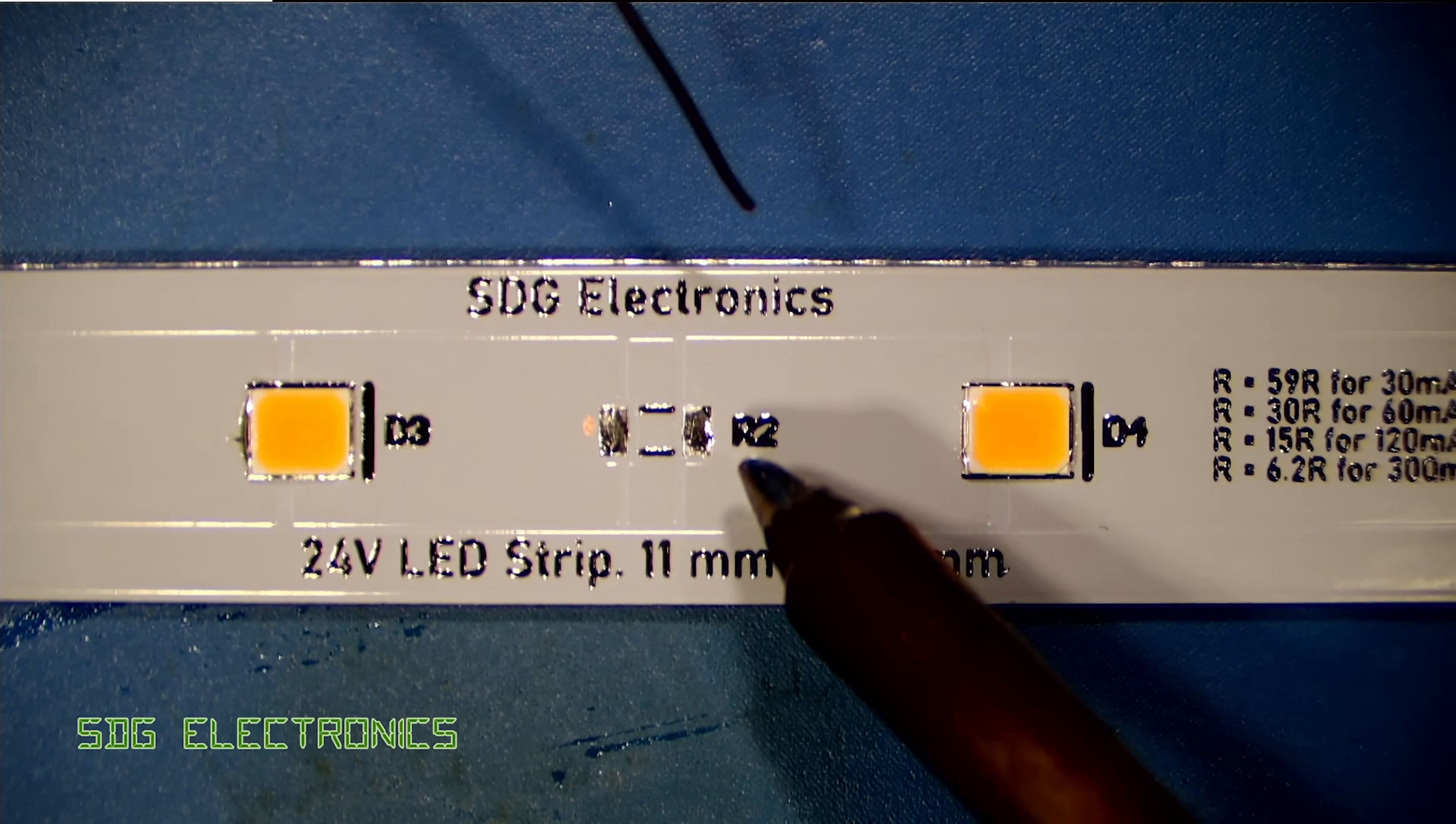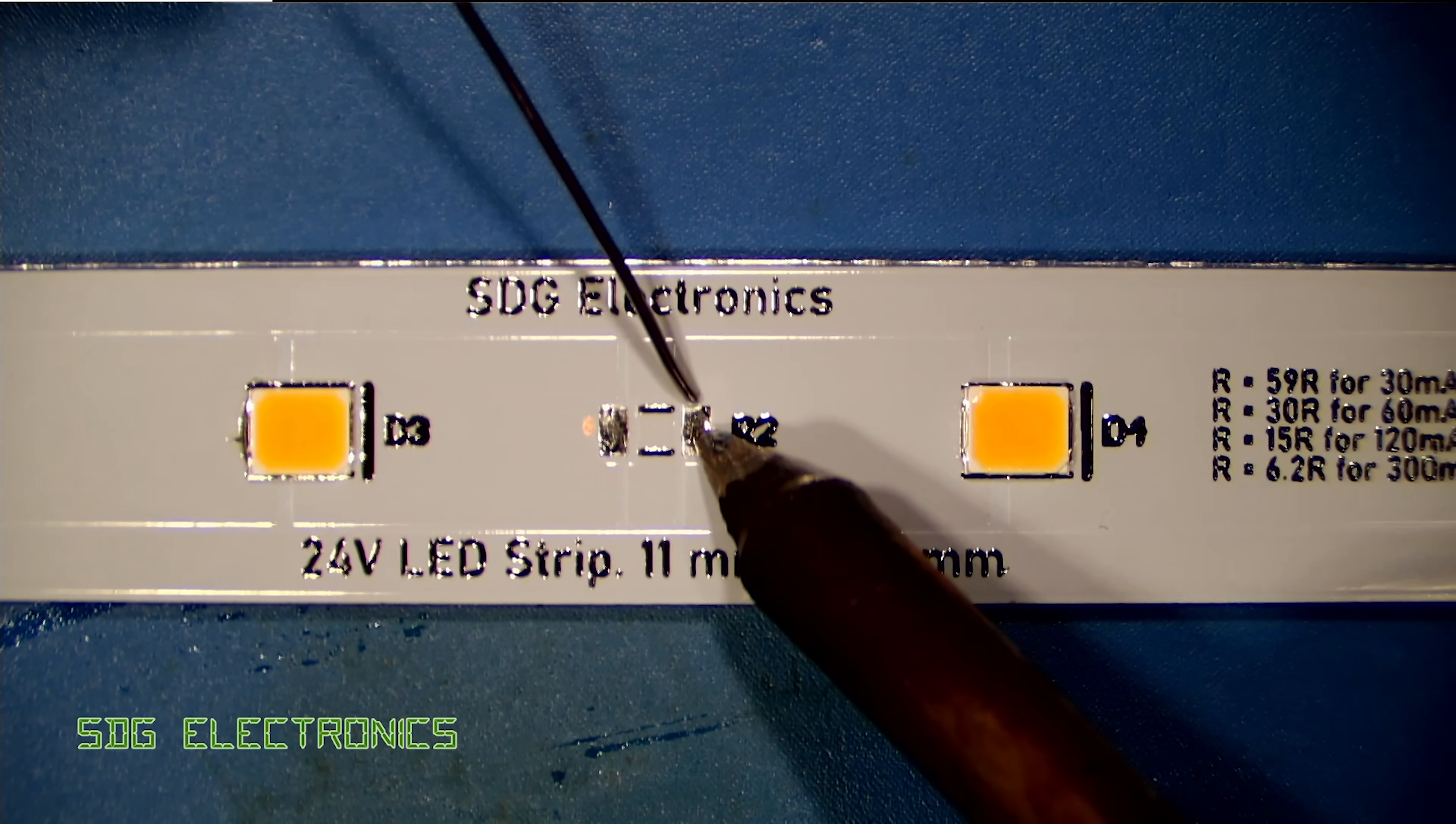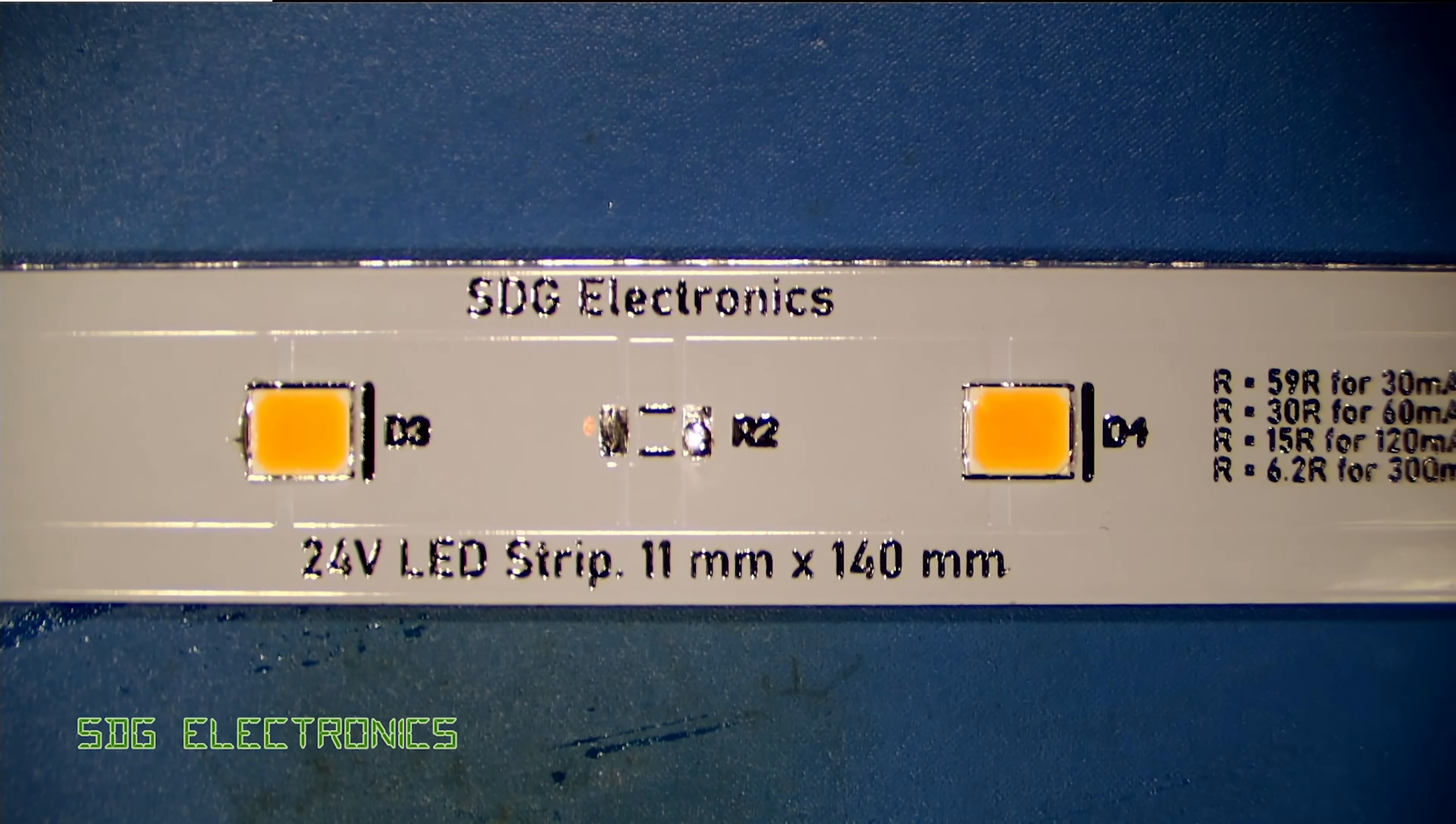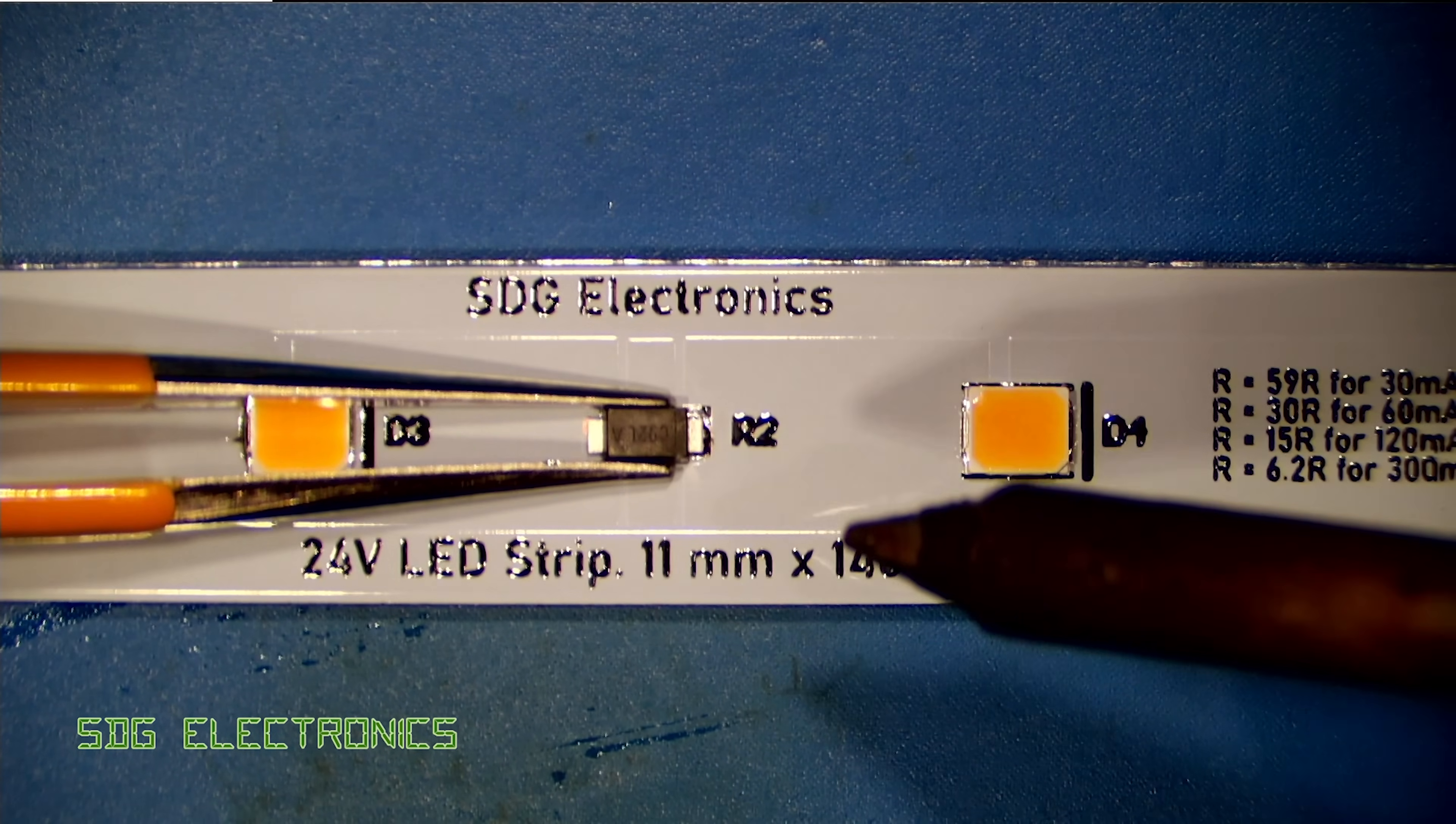So as with any other surface mount part we'll just put a bit of solder on one of the pads, use that to tack down our constant current diode